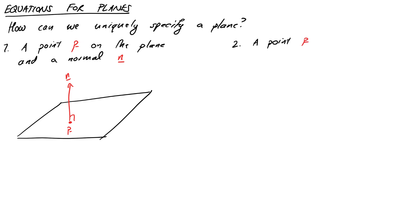Alternatively, instead of having a point and a normal, we could have a point and two different directions, not parallel ones, that are parallel to the plane. There's only one plane that can fit through the point in these two vectors, and that, again, will uniquely determine our plane.